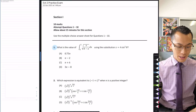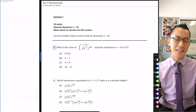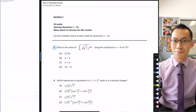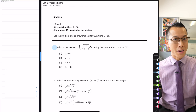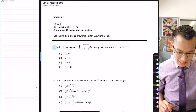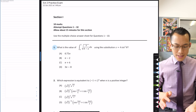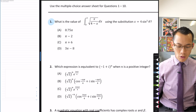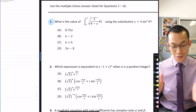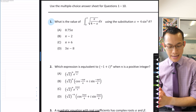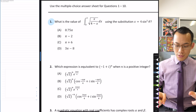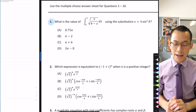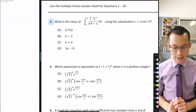You'll see as we go along that I've highlighted the questions I want us to look at, and the very first one is in multiple choice — it's question 1. It asks for the value of this definite integral from 0 to 2 of the square root of x on 4 minus x with respect to x, using the substitution x equals 4 sine squared theta.